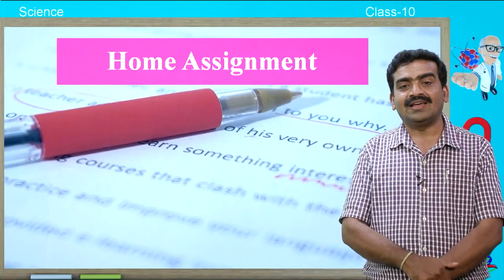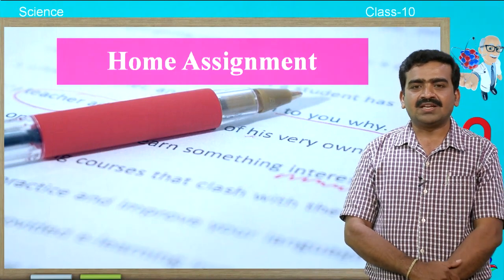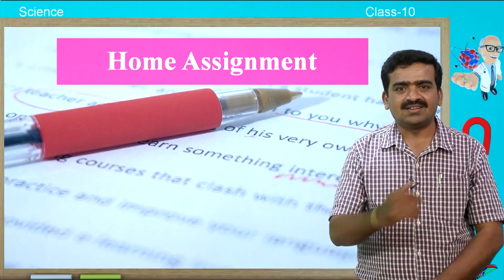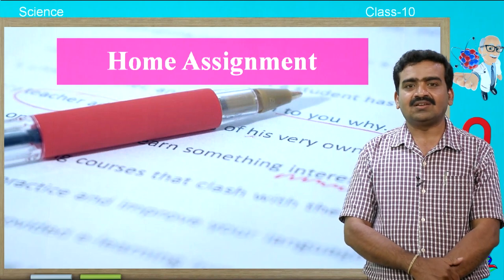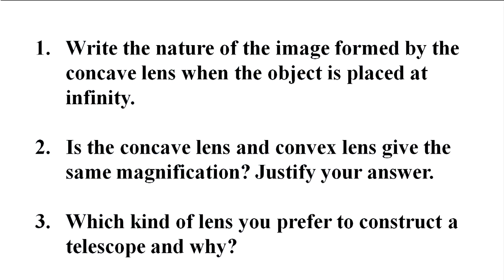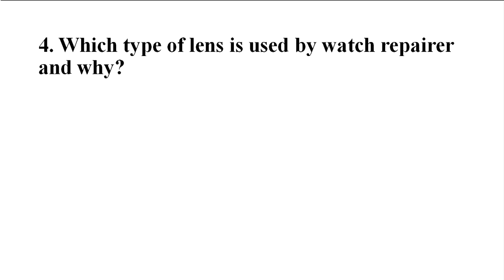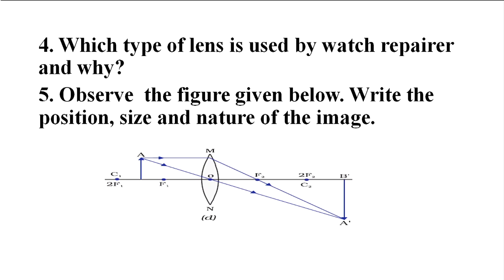My dear students, I hope you all enjoyed the quiz session. Now you have a home assignment based on the concepts you have learnt in this session — write the answers and show them to your teachers. The questions are: 1) Write the nature of the image formed by the concave lens when the object is placed at infinity. 2) Do the concave lens and convex lens give the same magnification — justify your answer. 3) Which kind of lens would you prefer to construct a telescope, and why? 4) Which type of lens is used by a watch repairer, and why? 5) Observe the figure given below and write the position, size, and nature of the image.